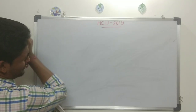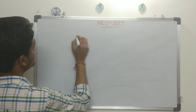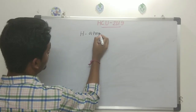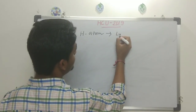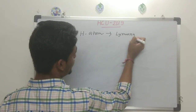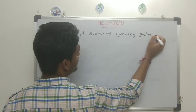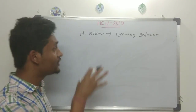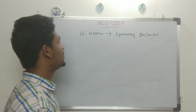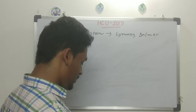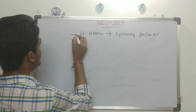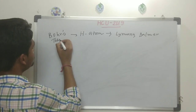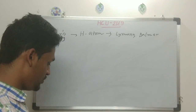From physical chemistry, one very important topic is hydrogen atom spectroscopy — the Lyman series, Balmer series, Rydberg constant, and related numerical problems. These questions have been coming consistently. As a whole, Bohr's theory is also important and covers this area.